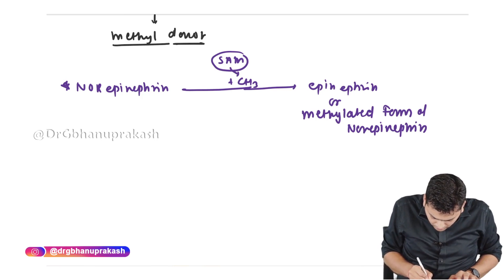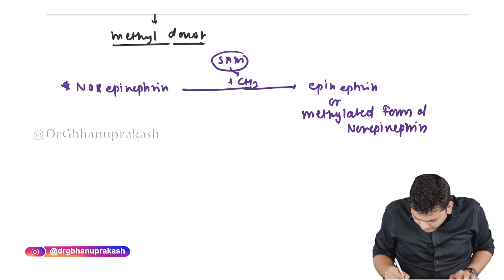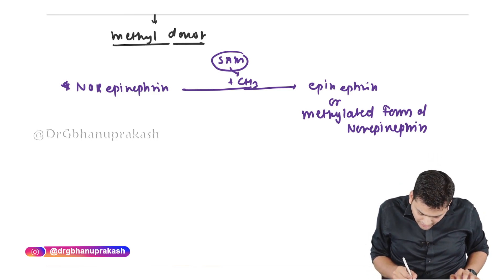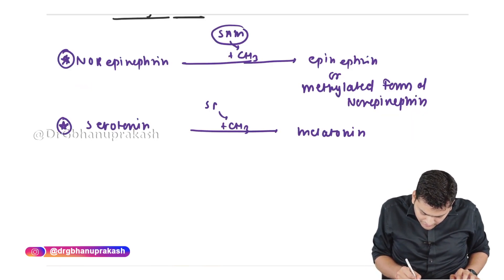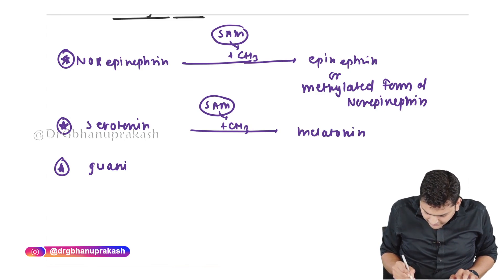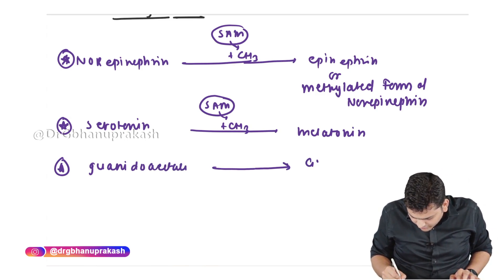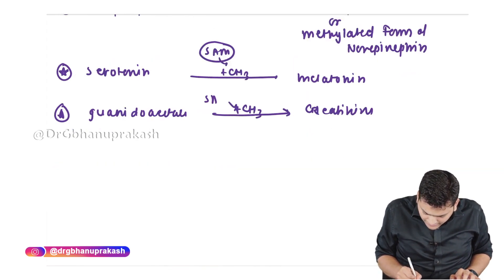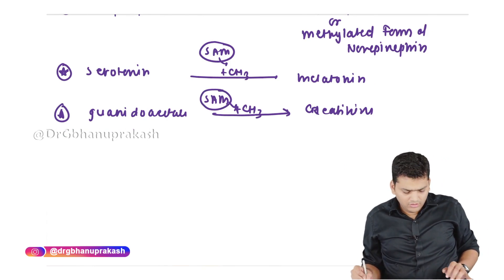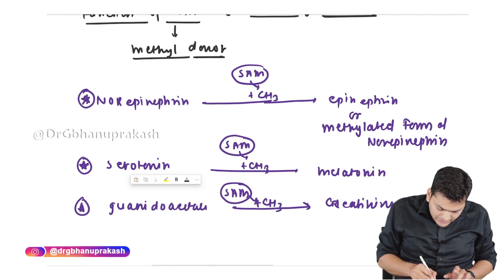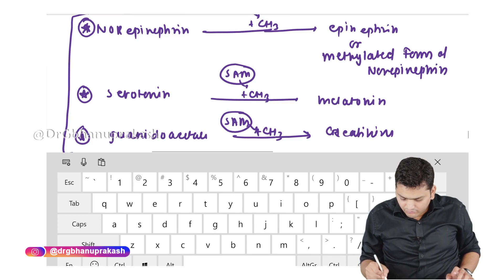Other uses of SAM: to convert serotonin into melatonin, you also need to add a methyl group, requiring SAM. Third, when converting guanidoacetate into creatine, you again need to add a methyl group requiring SAM. These are the three important examples of SAM usage that one should be aware of.